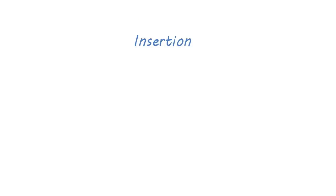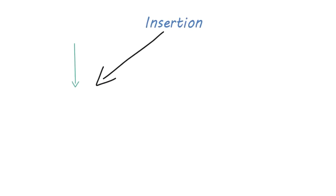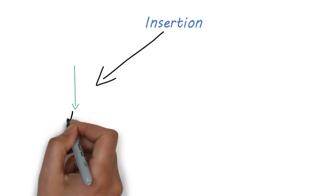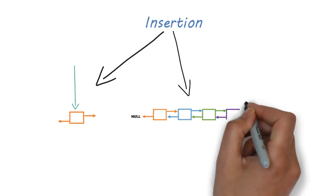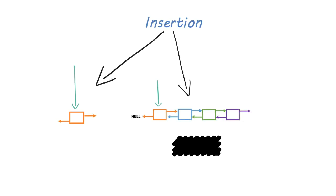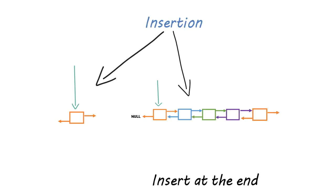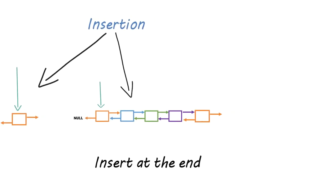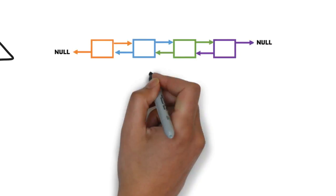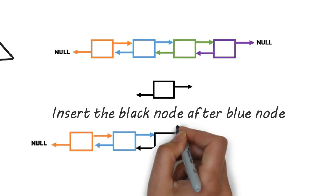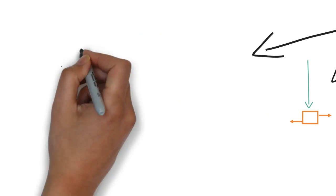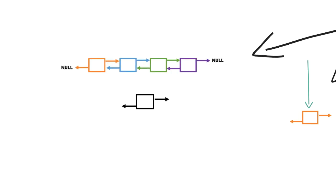Now let's see about insertion. The code for insertion is not going to be the same in every situation — there are 4 cases. First case: insert the first node in the list, when the start pointer is pointing to null. Second case: insert a node at the end of the list. Third case: insert a new node after some node — for example, insert the black node after the blue node. The last case: insert a new node at the beginning of the doubly linked list.